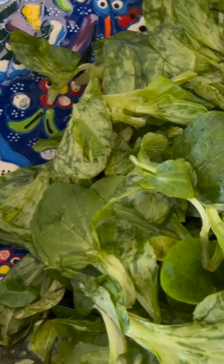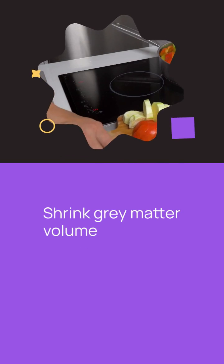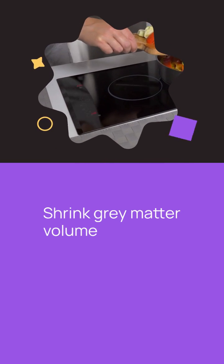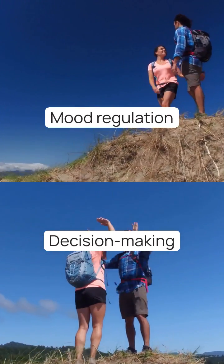The study, published in Nutritional Neuroscience, also found that such diets could shrink gray matter volume in the frontal regions of the brain. These areas are crucial for mood regulation and decision-making.